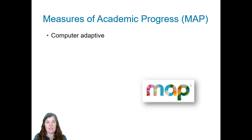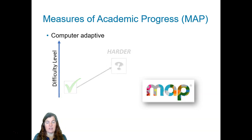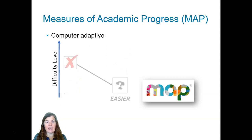The MAP assessment is computer adaptive. What does that mean? When a student takes the test, they're first going to be presented with a grade level difficulty item. If he or she is able to answer that question correctly, the next one is going to be harder. If they're unable to answer it correctly, the next one is going to be easier.